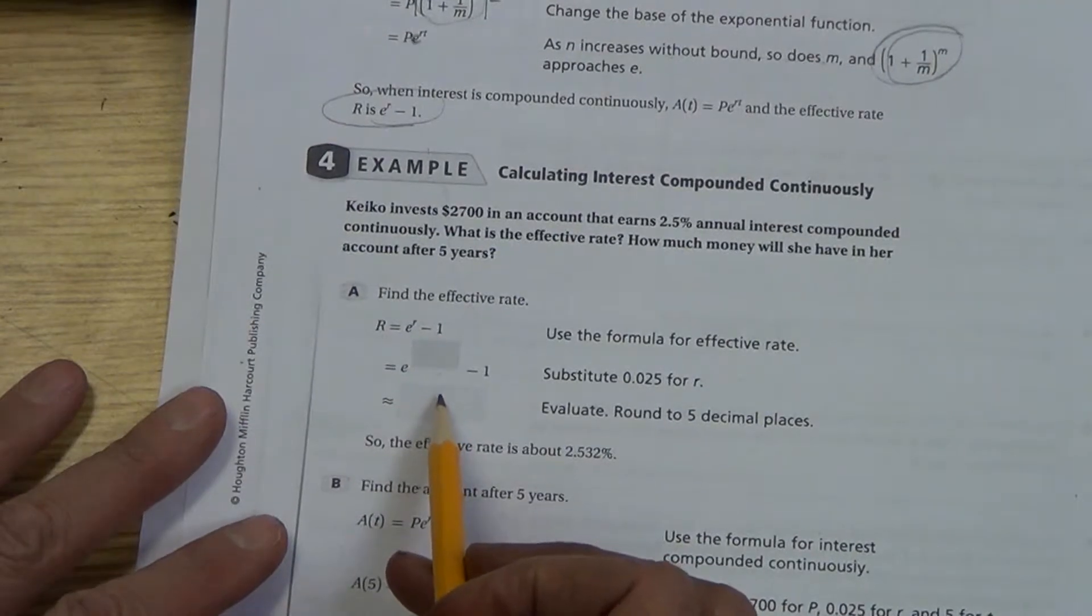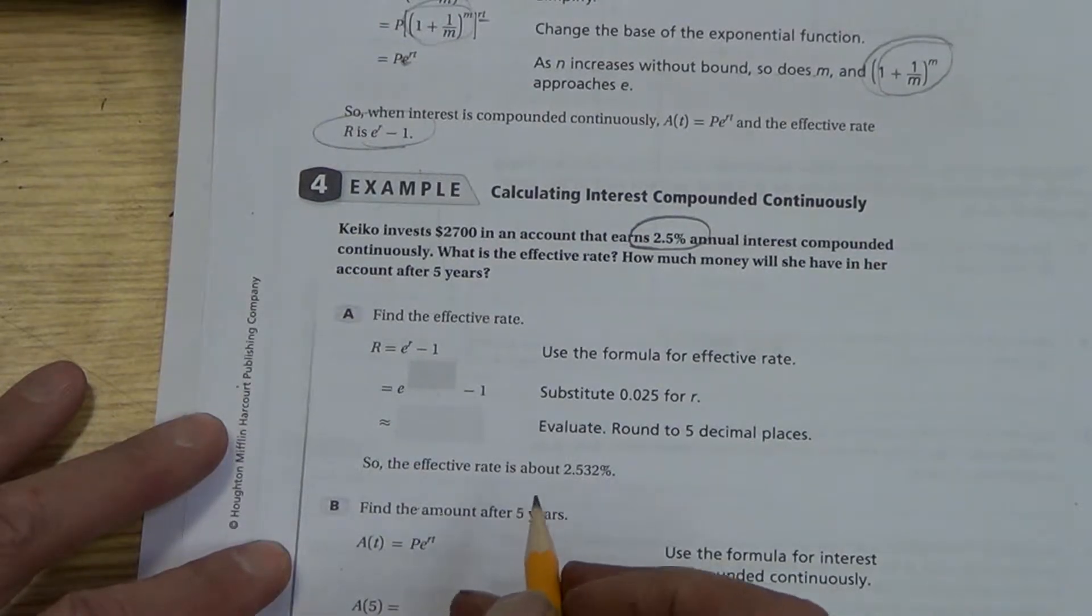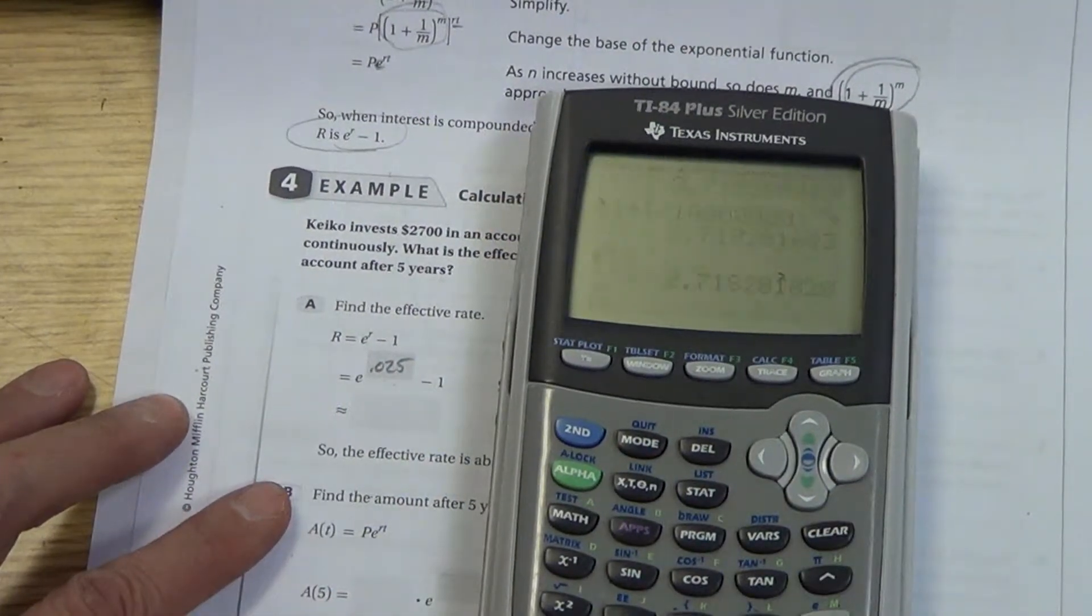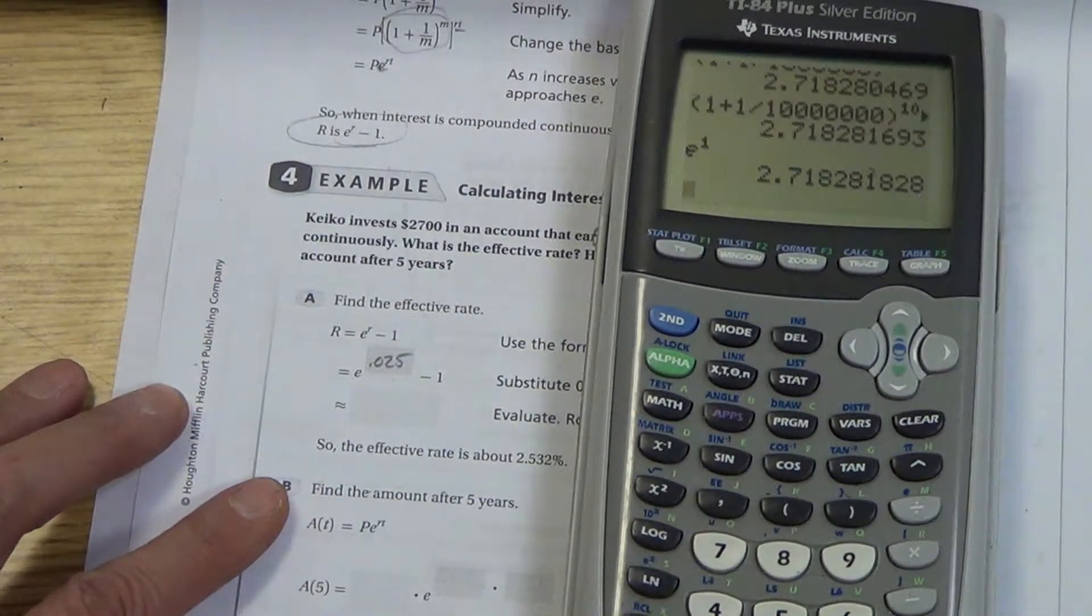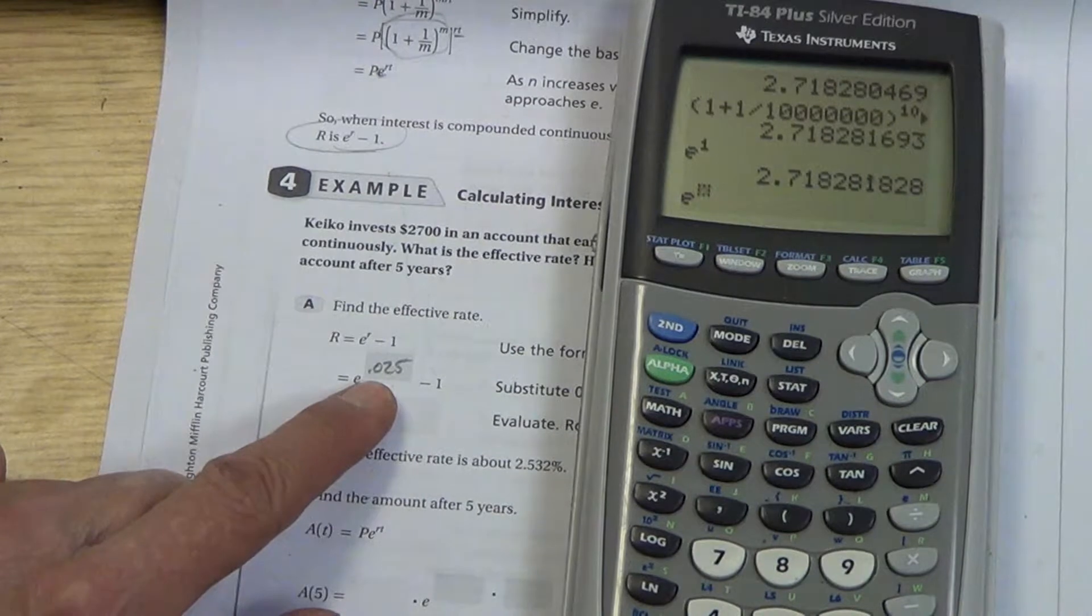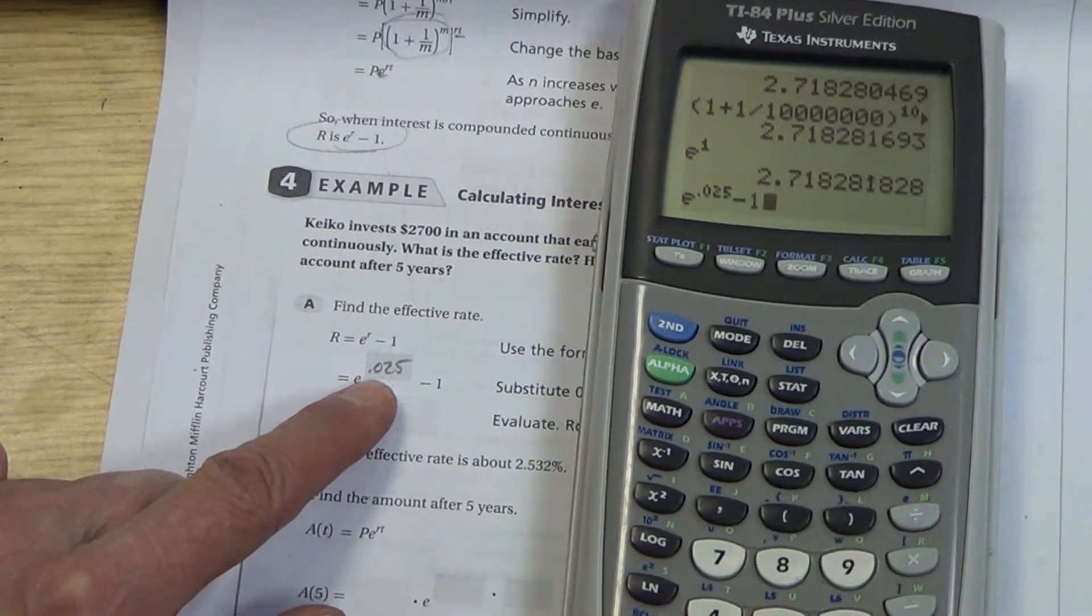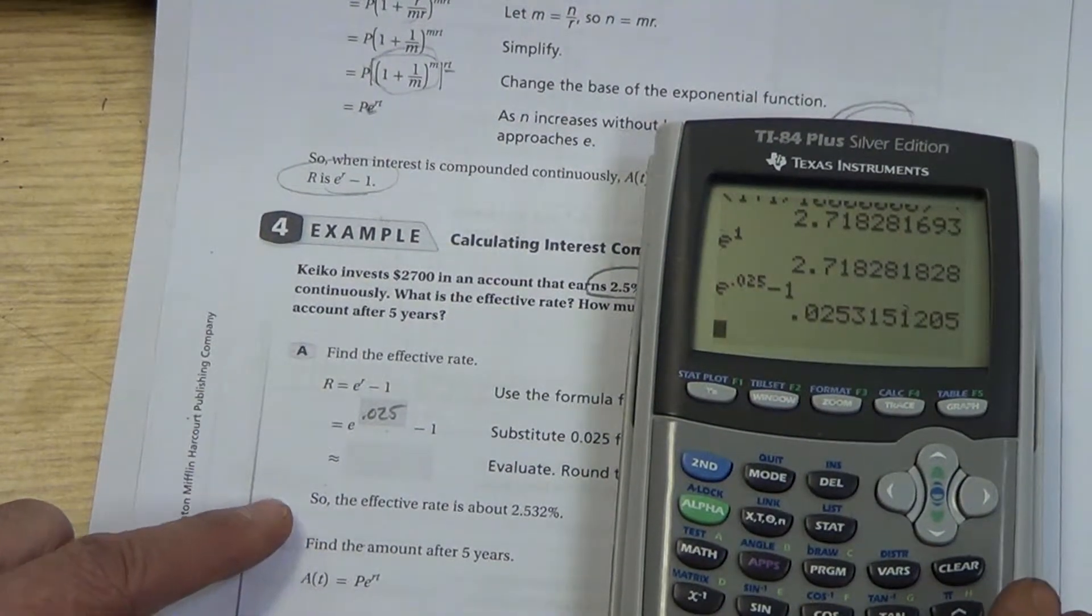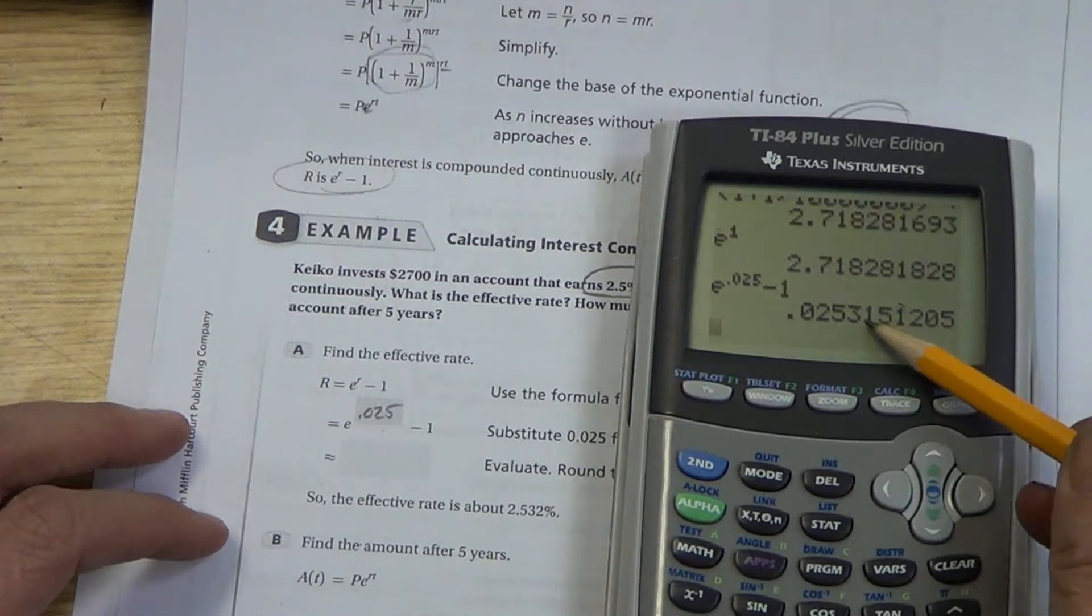Find the effective rate. All that we need to do is look for our rate. That's 2.5%, so it becomes 0.025. And we just take Euler's number E. Remember, it is on here. The way that you do it is you go 2nd, LN, raised to the 0.025, minus 1. And there's our effective rate. Go ahead and write it down. You can round it to five decimal places. So 0.02531, that's a 5, so round that up to a 2.